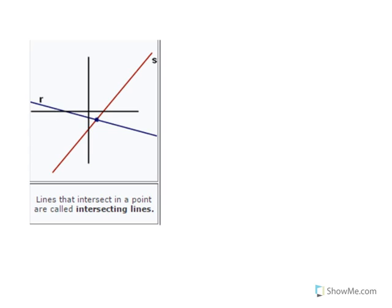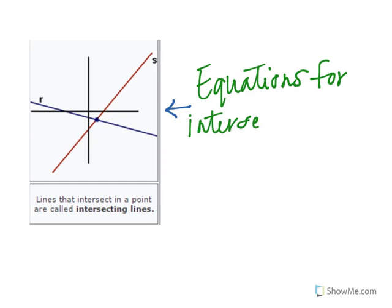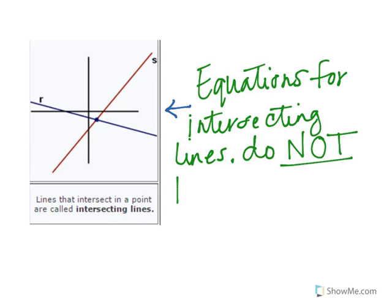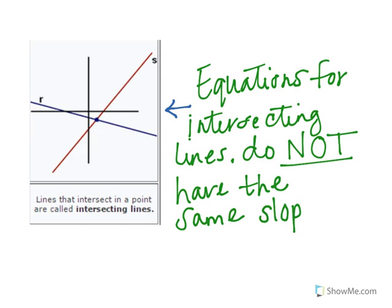Lines that intersect in a point are called intersecting lines. Equations for intersecting lines do not have the same slope and y-intercept.